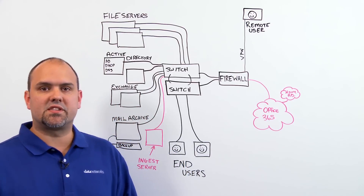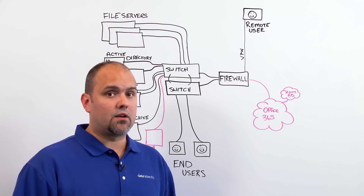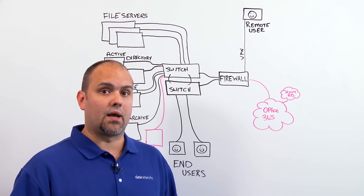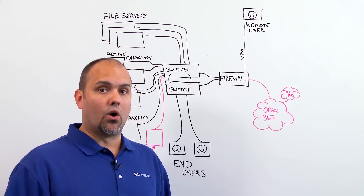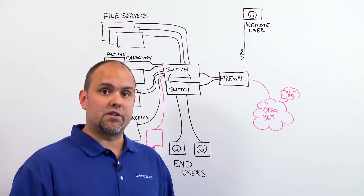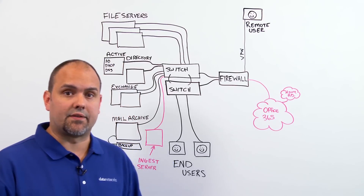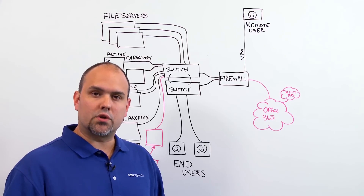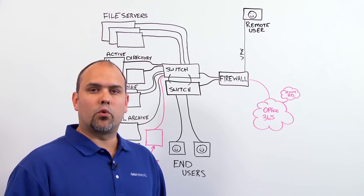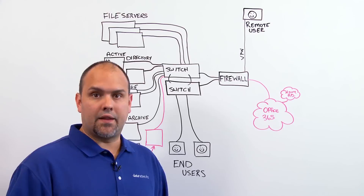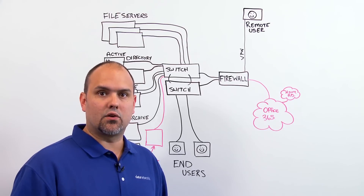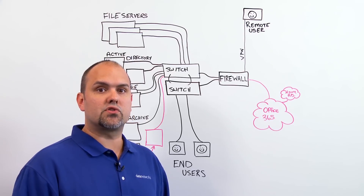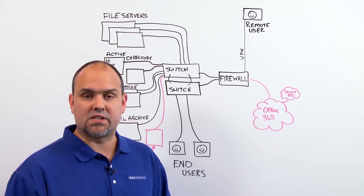Your next option is a staged migration. You will use this if you're planning to move all of your mailboxes to Exchange Online over a period of time, but this option is only supported on Exchange 2003 or 2007. Your third option is a cutover migration — a short-term migration where users will be migrated in one batch and cut over in a single swoop. This is used for 2,000 or fewer mailboxes and when the user's identity will be managed in Office 365.